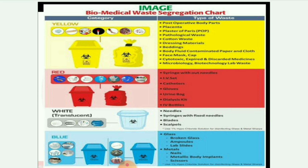In the red category: syringes without needles, IV sets, catheters, gloves, urine bags, dialysis kits, and IV bottles. In the white category: needles, syringes with fixed needles, blades, and scalpels. In the blue category: glass, broken glass, ampoules, lab slides, metals, nails, metallic body implants, and scissors.